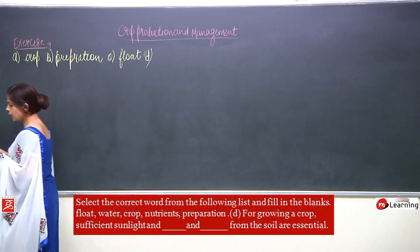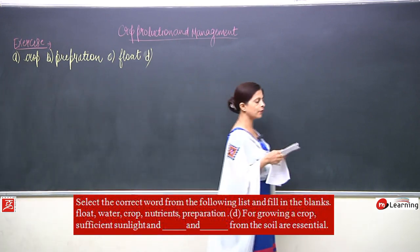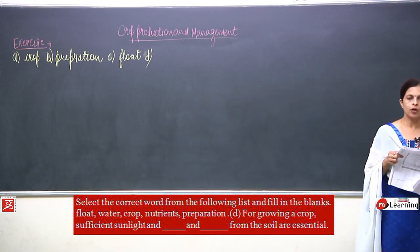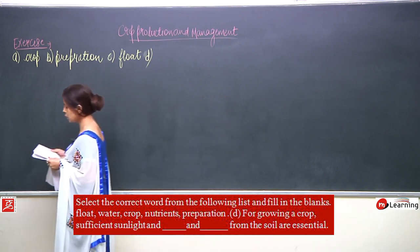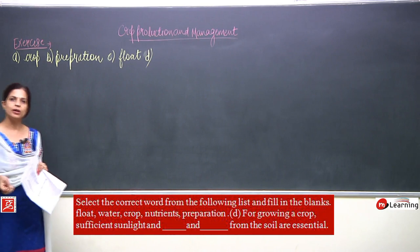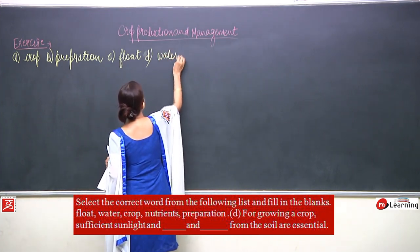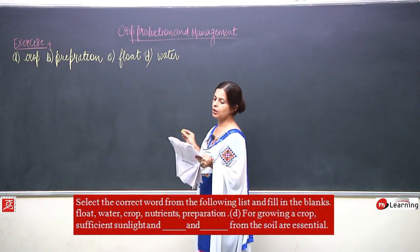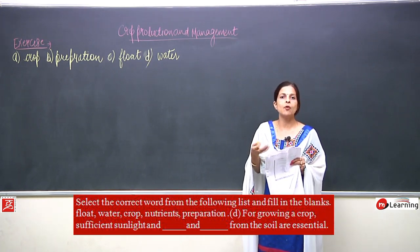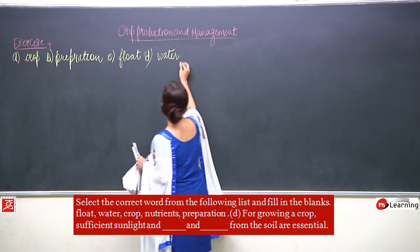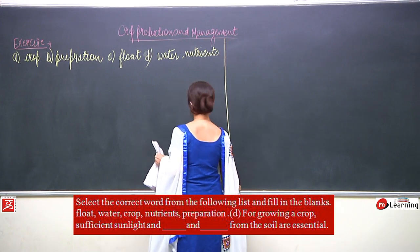Question D: for growing a crop, sufficient sunlight and blank and blank from the soil are essential. What is essential for a crop to grow? Sunlight is there, and from the soil the crop can absorb water and nutrients. So the answer is water and nutrients.